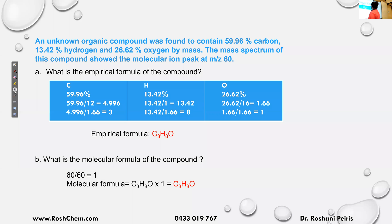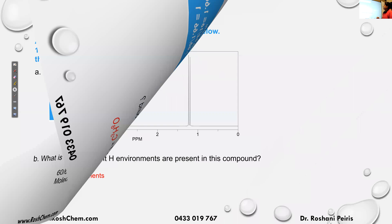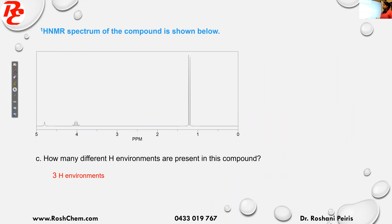Now we will go to the next question. The ¹H NMR spectrum of the compound is shown below. So what we can see in this ¹H NMR spectrum? We see a singlet here, you have a splitting of seven, and that's a doublet.